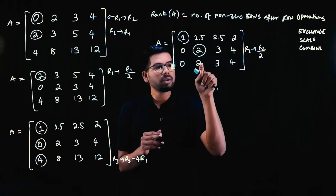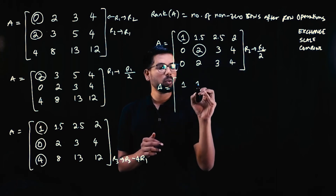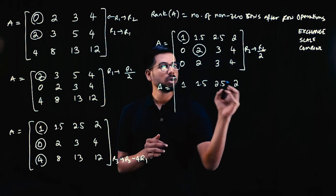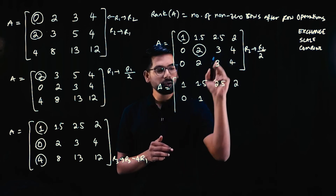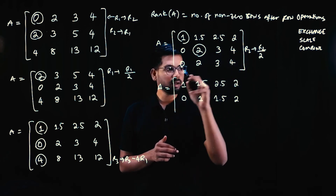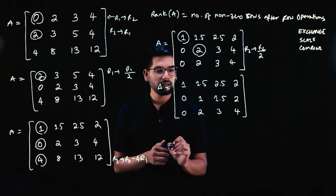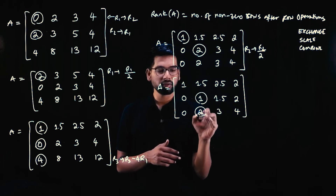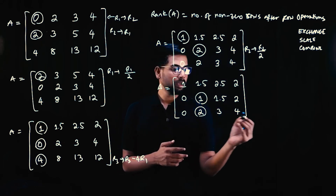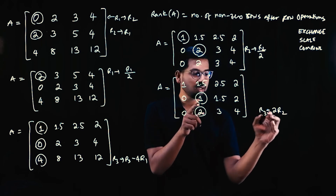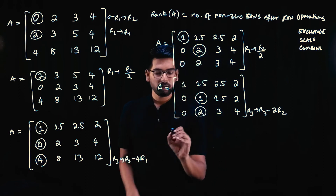After dividing R2 by 2, the matrix is: first row: 1 1.5 2.5 2; second row: 0 1 1.5 2; third row: 0 2 3 4. Now we need to use the second row to make the first element of the third row's second column zero. Since 2 minus 2 times 1 equals 0, we apply R3 = R3 minus 2 times R2.